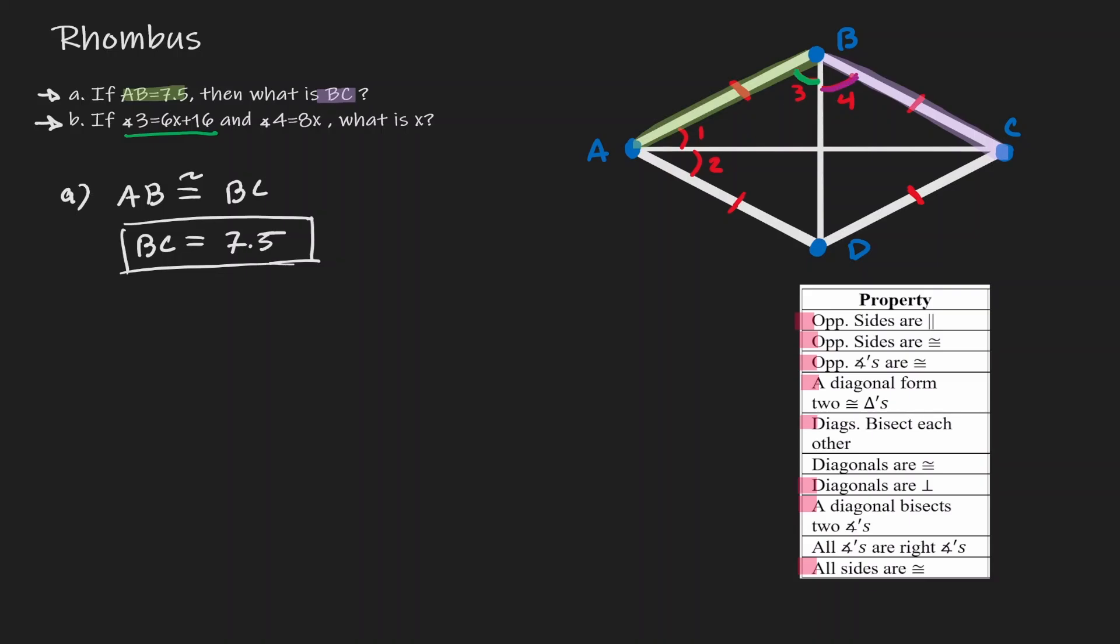Now we're going to think about, do we know any relationship among those two angles? We got certain properties here on the bottom, and the property that we're going to be using is the one that we have here almost at the bottom. Within a rhombus, diagonals bisect two angles.